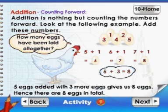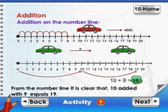there are eight eggs in total. From the number line, it is clear that ten added with nine equals nineteen.